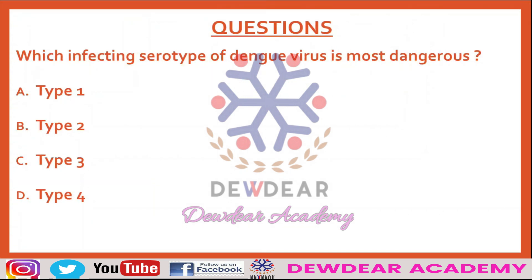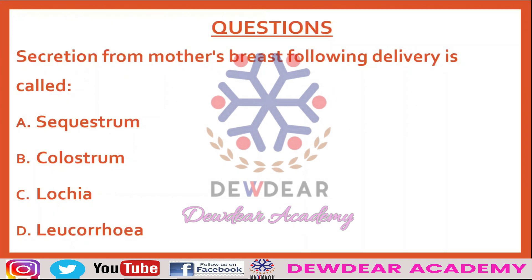Which infecting serotype of dengue virus is most dangerous? Options are type 1, type 2, type 3, type 4. The correct answer is type 2. Type 2 serotype is the most dangerous — it can be the most severe and most fatal. Dengue fever is transmitted by female mosquitoes, mainly of the species Aedes aegypti.